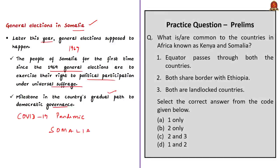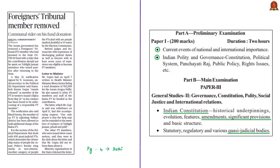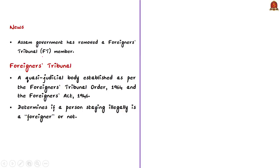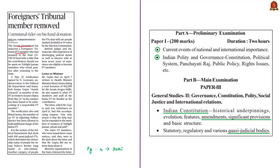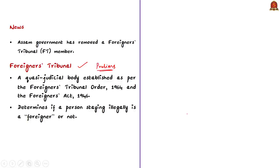Let us proceed to the next news article. This article talks about the Assam government removing a Foreigners Tribunal member on grounds of conduct unbecoming of a member of the tribunal. In this context, we'll discuss Foreigners Tribunals mainly from a UPSC prelims perspective. Foreigners Tribunals are quasi-judicial bodies established as per the Foreigners Tribunal Order of 1964 and the Foreigners Act of 1946. Only Foreigners Tribunals are empowered to declare a person as a foreigner staying illegally or not.